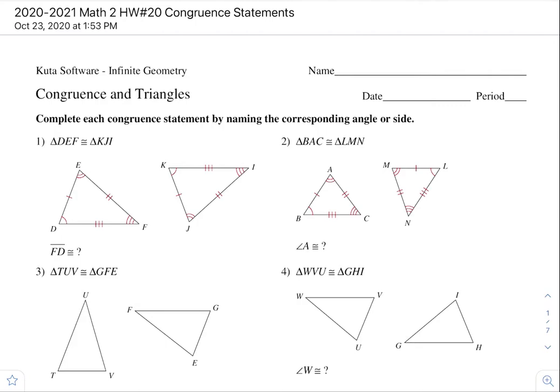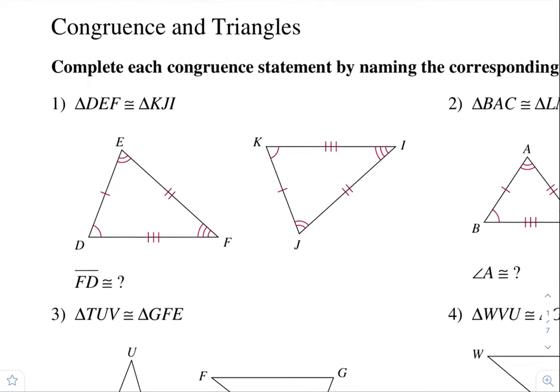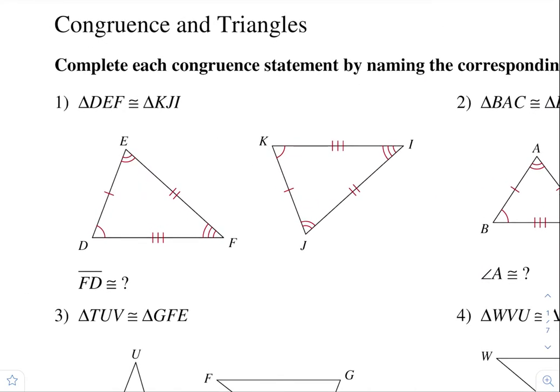Alright, here's homework number 20, congruent statements. Number one. We have these two triangles congruent to each other.